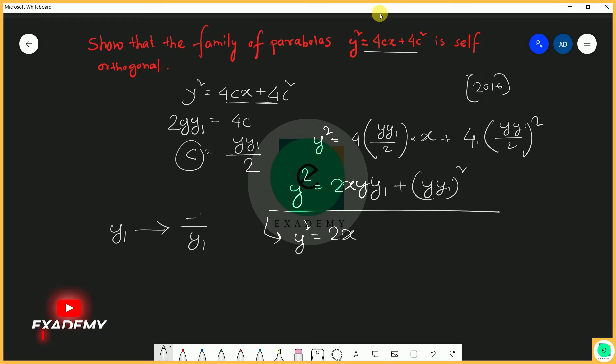So the equation will be y² = -2xy/y₁ + (y/y₁)². Multiplying through by y₁², we get y₁²·y² = -2xy·y₁ + y².